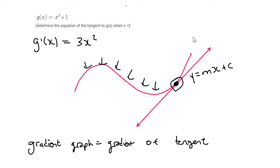Now, we know that the x value is 2, so we can fill that in. And if you do that, you're going to end up with 12.